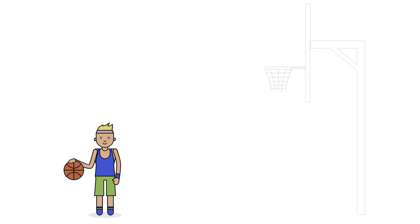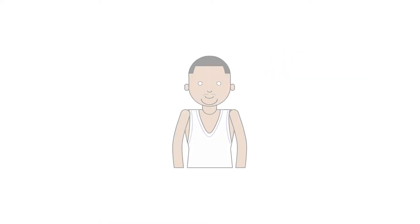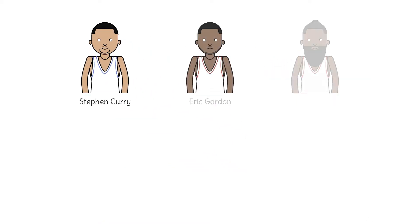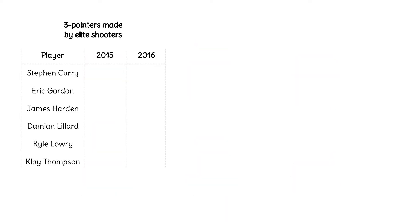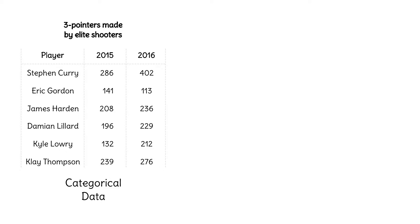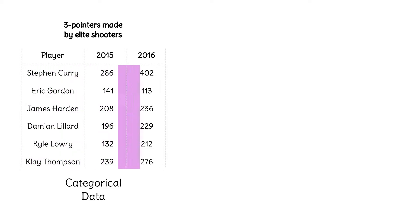Professional basketball is full of players who shoot three-point shots easily. Stephen Curry is the most famous of these great shooters, but there are other good ones too. Here's a table of six of the best, showing the number of three-pointers they made in two recent seasons. We call this categorical data — the category is the player, and the data is the number of threes made in each season.